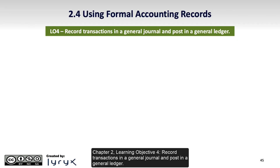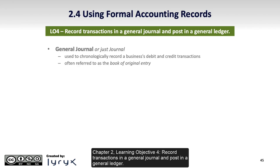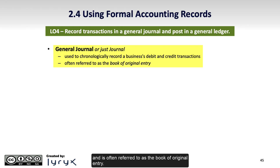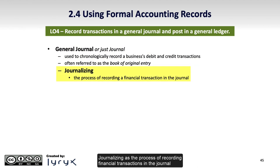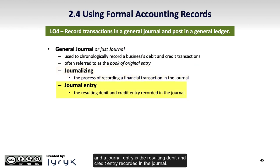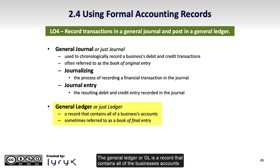Chapter 2 Learning Objective 4: Record Transactions in a General Journal and Post in a General Ledger. The General Journal is used to chronologically record a business's debit and credit transactions and is often referred to as the book of original entry. The General Ledger, or GL, is a record that contains all of the business's accounts and is sometimes referred to as the final book of entry.